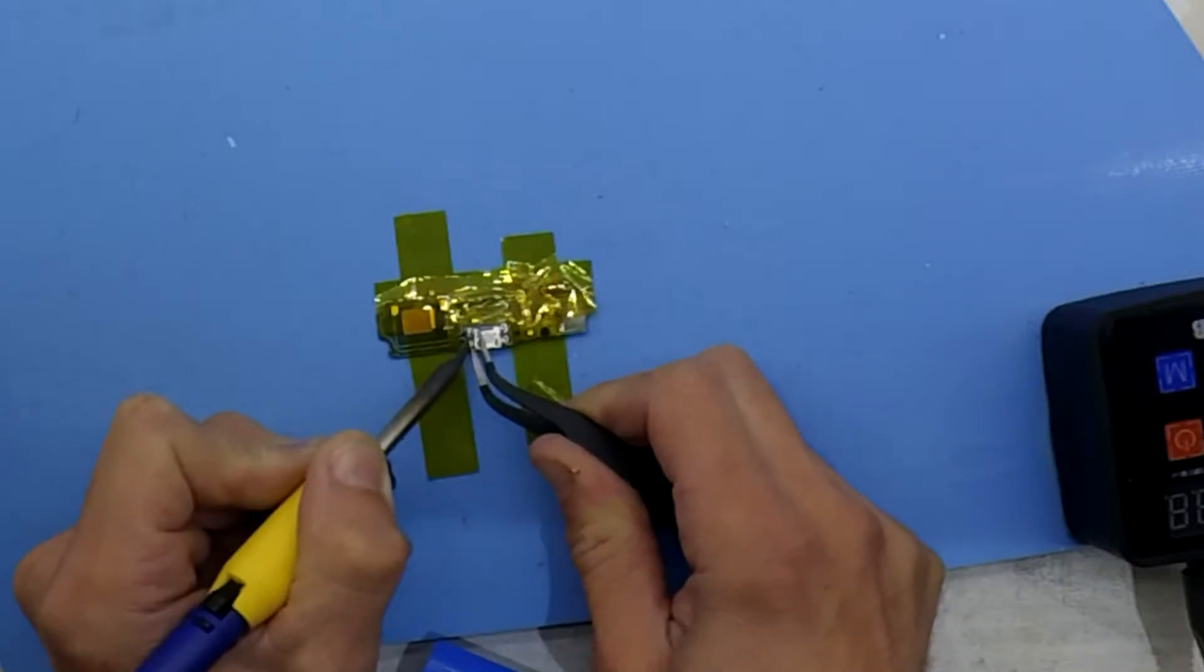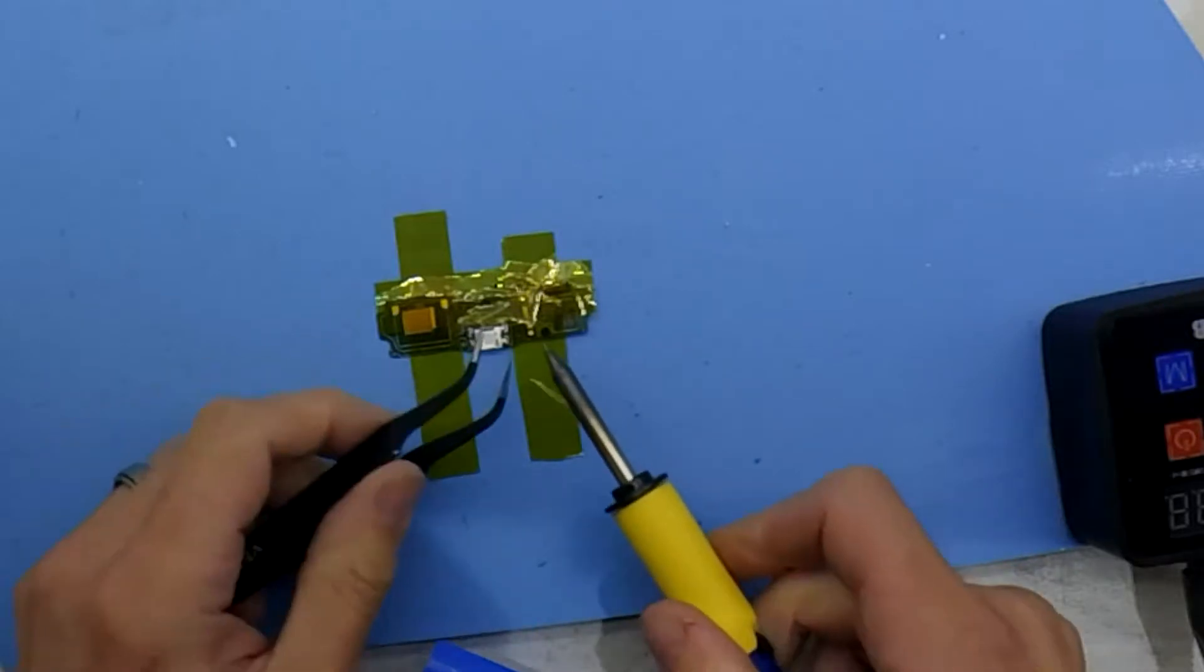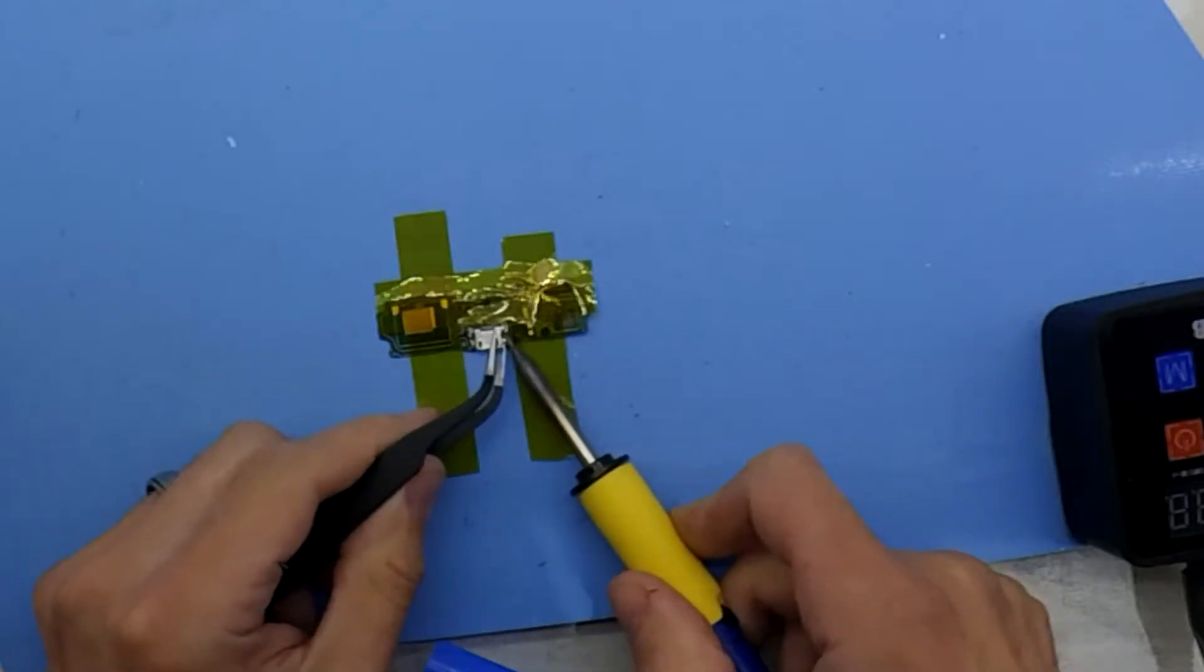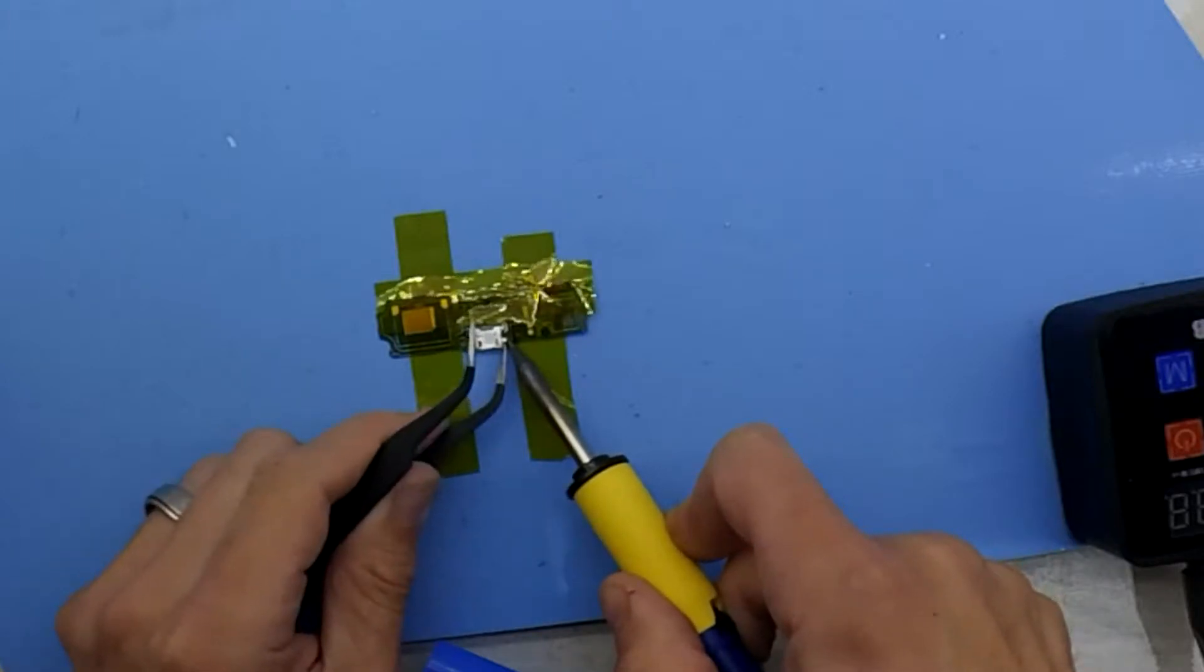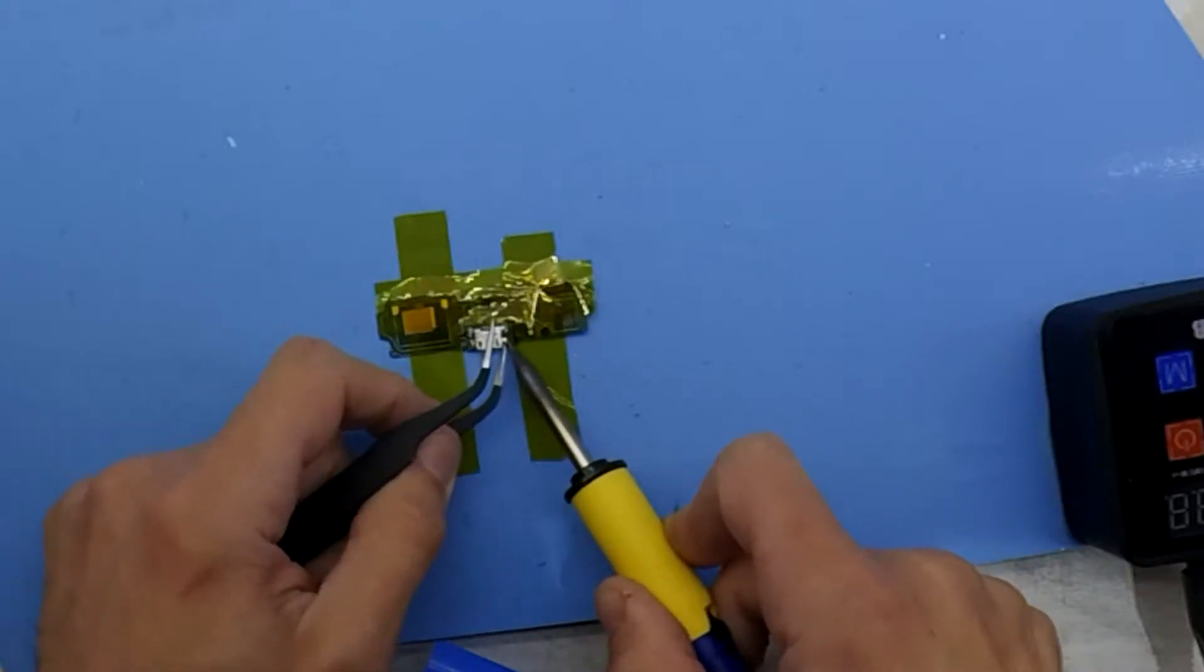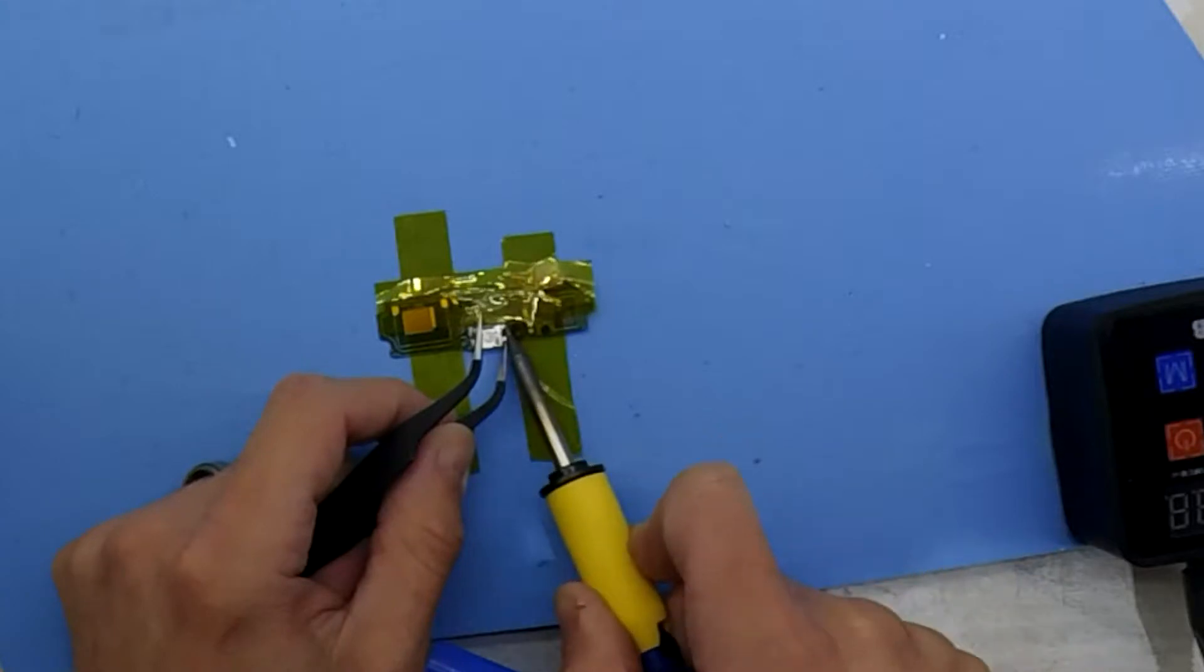I'm just using some tweezers to slowly separate the micro USB from the board. You've got to use enough force to separate and lift it, but not enough that you're going to tear the five pins off at the back of the jack. It's lifting all right right now.